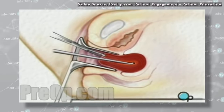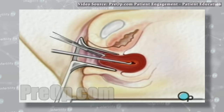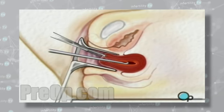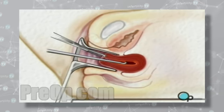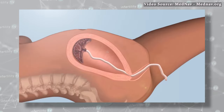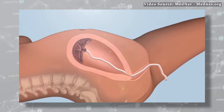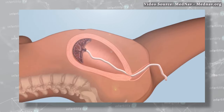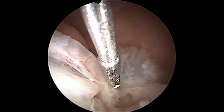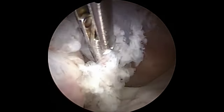Another type of surgical procedure called a D&C, or dilation and curettage, can also cause scar tissue. It is most likely to cause a problem if a D&C had to be performed after a delivery or a miscarriage because there was placental tissue that remained in the uterus.